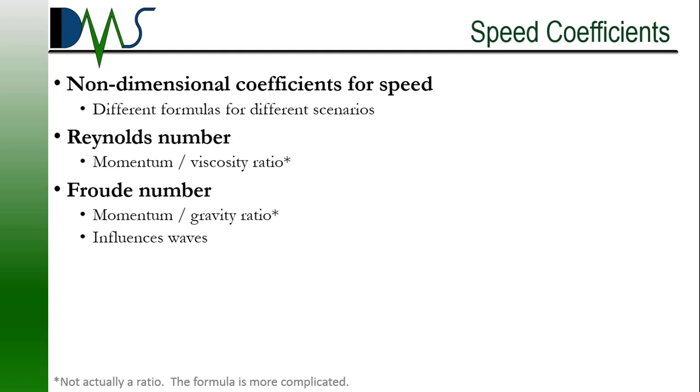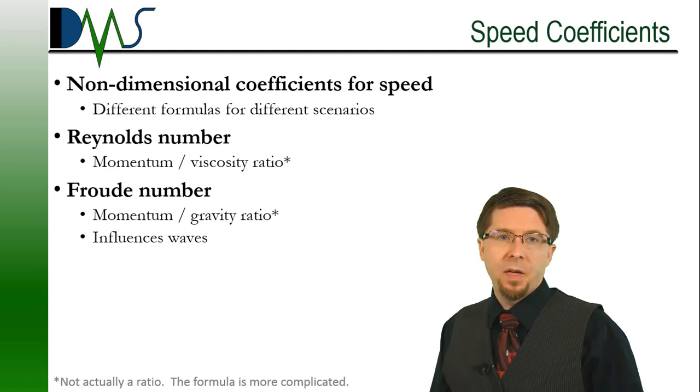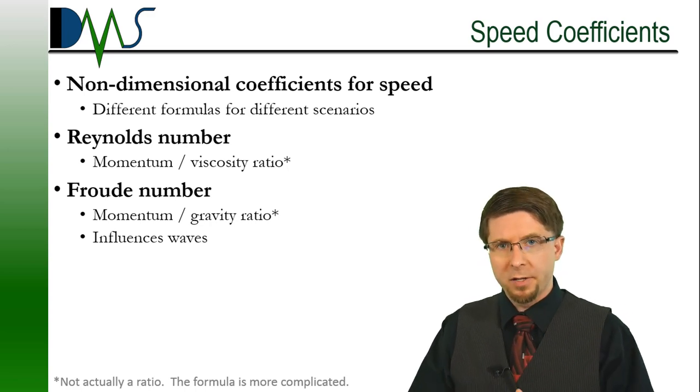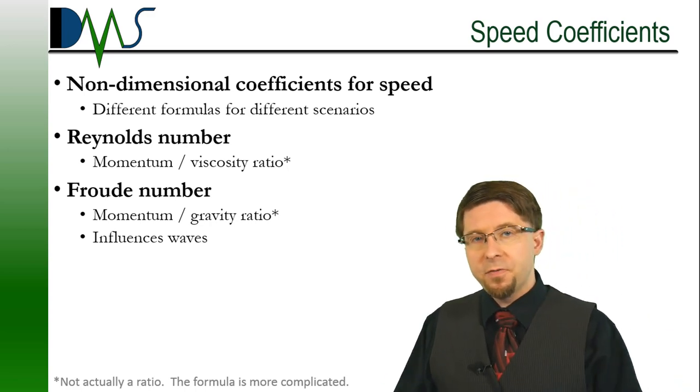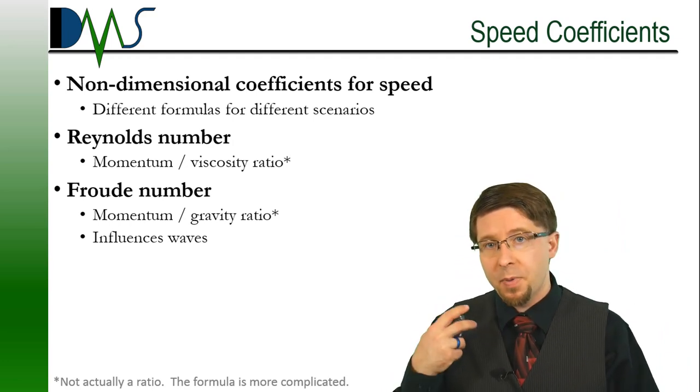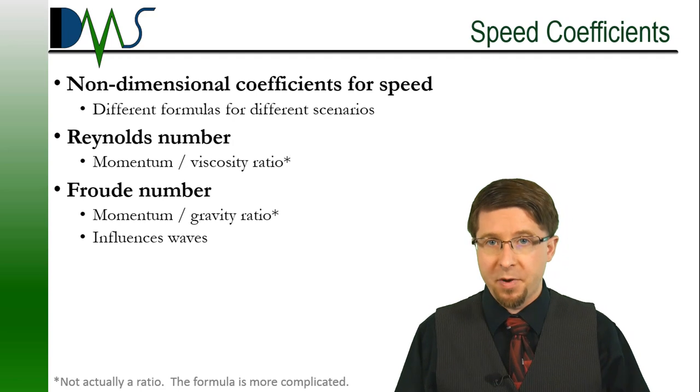For example, a submerged submarine would use the Reynolds number as a coefficient for speed. The Reynolds number focuses on the ratio between the momentum of the water and its viscosity. The actual math is a little more complicated than just taking a simple ratio, but we're focusing on concepts here. The fathers of fluid dynamics derived several different coefficients, based upon different combinations of dominant forces.